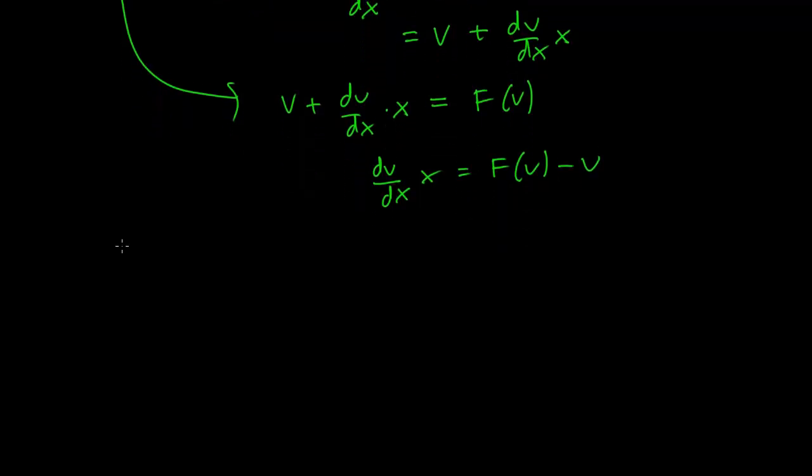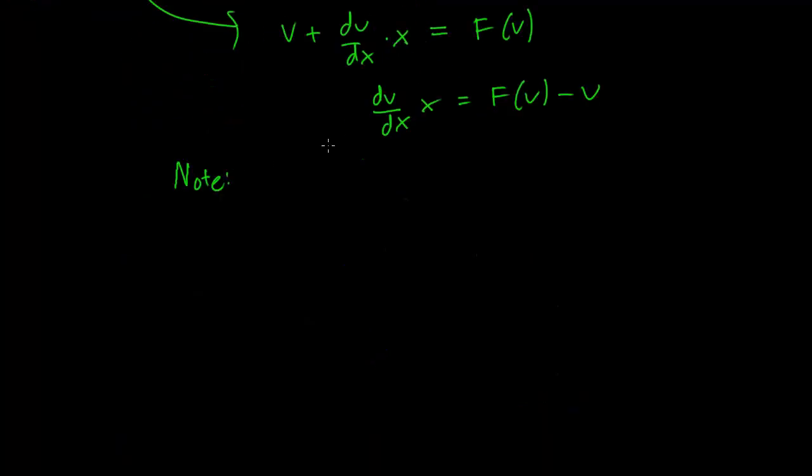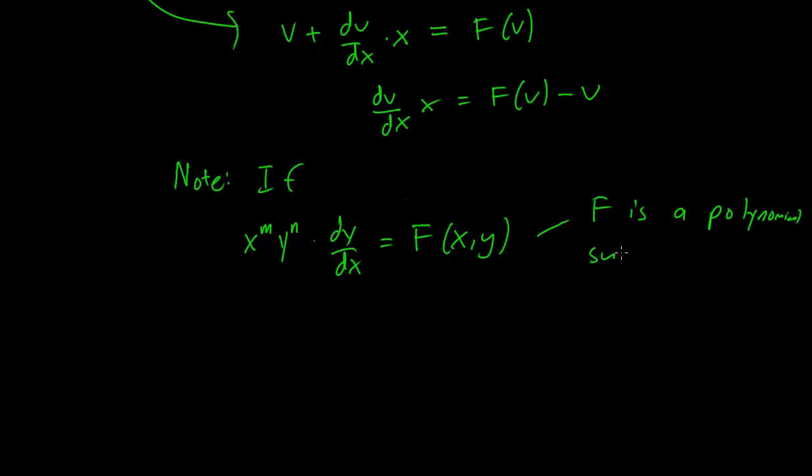And I will add a little note about recognizing when a problem is set up in homogeneous form. So if your differential equation is written in the form x^m y^n times dy/dx equals F(x,y), where F is a polynomial such that every term has equal degree.